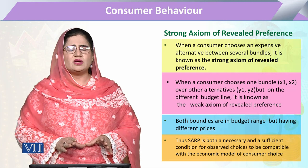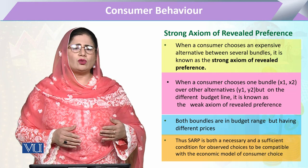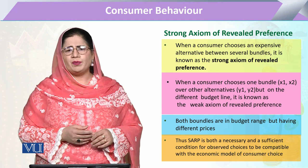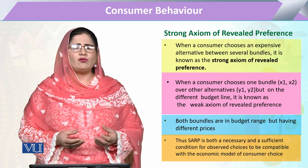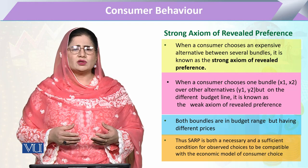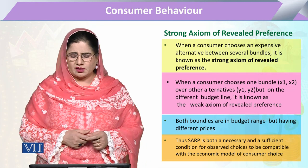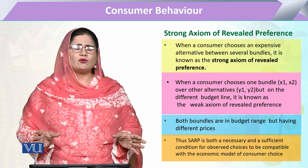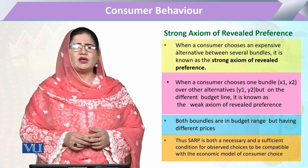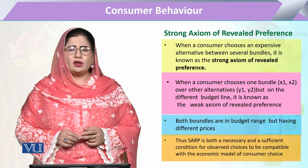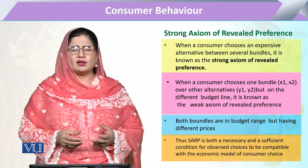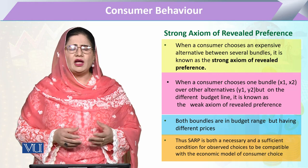This strongly expresses the consumer's preference. If bundle A is preferred over bundle B when both bundles are available, this is a strong and sufficient condition for revealed preference. When this condition is fulfilled, we say that revealed preference has actually been exhibited.